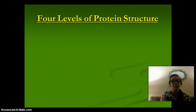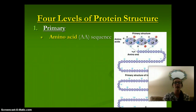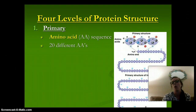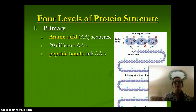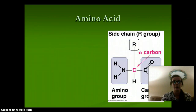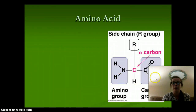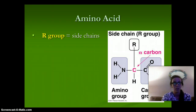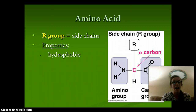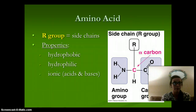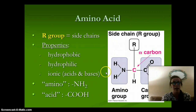There are four levels of protein structure. The primary level is an amino acid sequence — a chain of amino acids. There are 20 different amino acids in nature, and peptide bonds link them together. All amino acids have an amino group, a carboxyl group, and a side chain or R group. The R group is different for each amino acid. Their properties can be hydrophobic or hydrophilic, and they are ionic — acids or bases. The amino group is always NH2, and the acid part is the carboxyl group, COOH.